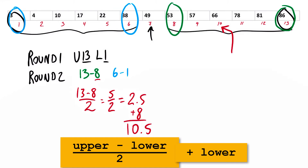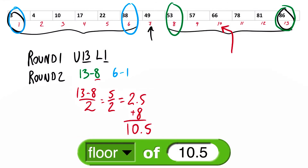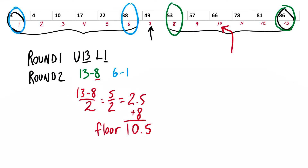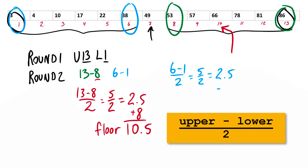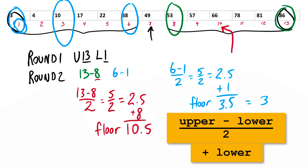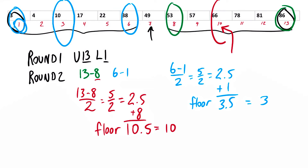The way to round down in a programming language is to use the floor function. So if I do the floor of 10.5, I will always get 10. If I do the floor of 10.9, I get 10 as well because it always rounds down. Now I need to see if I can use this modified formula for positions 1 through 6. When I do 6 minus 1 divided by 2, I get 2.5. Adding the lower value of 1 gives me 3.5, and the floor of 3.5 equals 3. So position 3 is the new median.